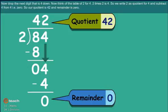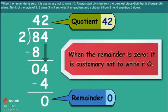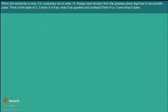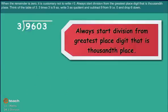Information box: when the remainder is 0, it is customary not to write R0. Always start division from the greatest place digit, that is the thousands place.